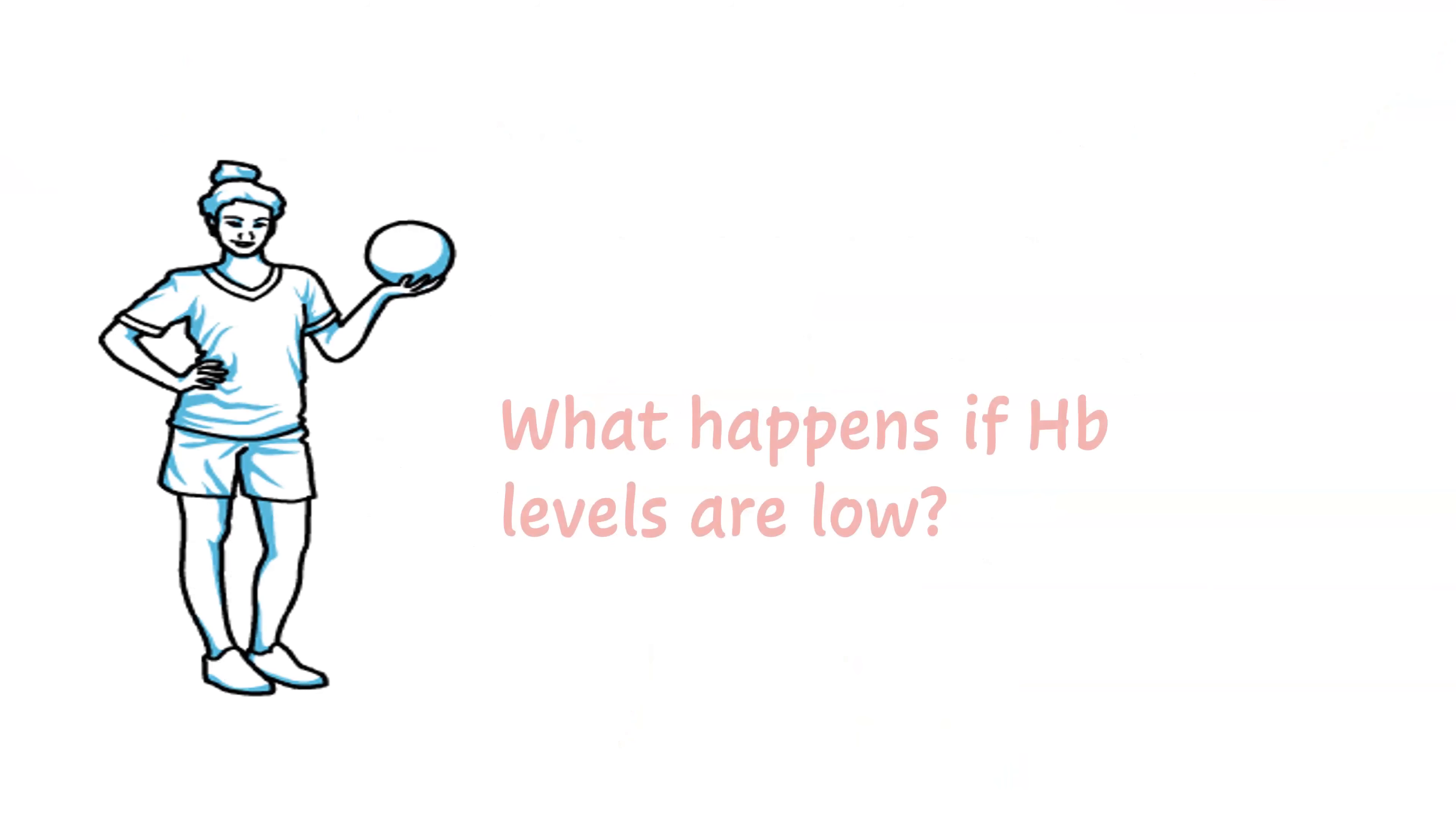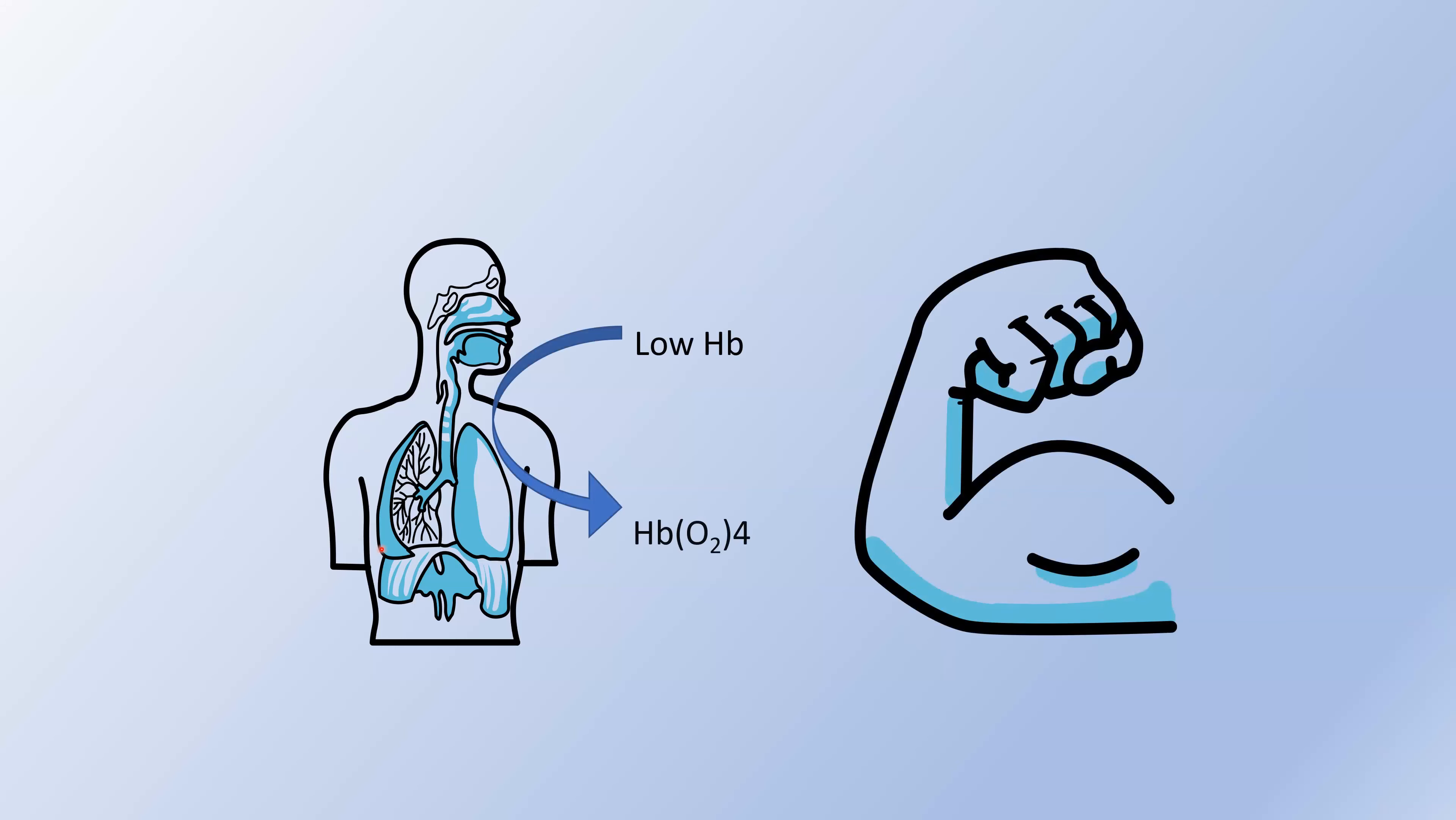What happens if hemoglobin levels are low? If hemoglobin levels are lower than the normal range, we call that condition anemia. In anemia, due to less hemoglobin, less oxygen is delivered to the tissues. This may lead to decreased energy production in our body.